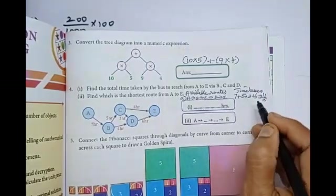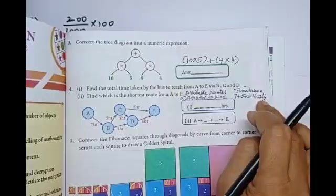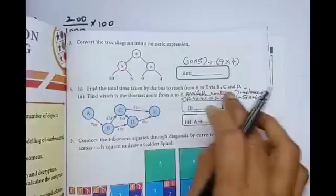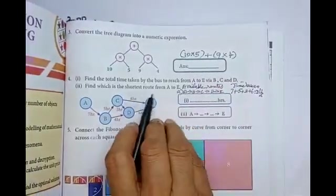Then, you see which one shortest. Here, 21 hours. Then, which hours very small. That one, that route is very shortest route.